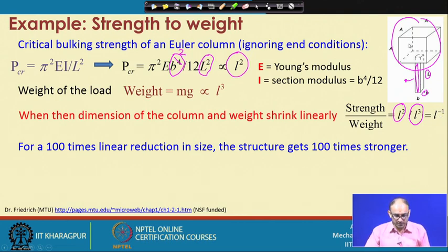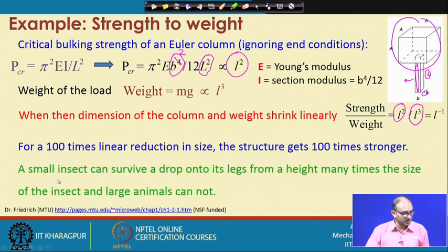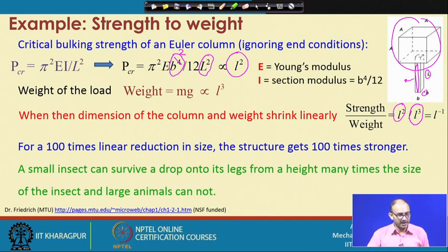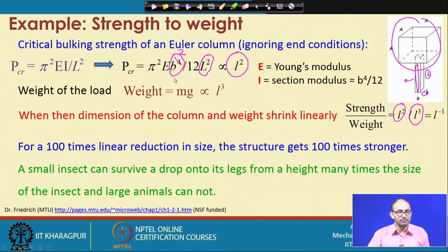The advantage is that when scaling down systems such as cantilever beams carrying loads, smaller things actually retain relatively large strength. For example, smaller insects can survive a drop from many times their height. A lizard falling from a 2–3 floor building walks away without harm. But a large animal cannot — if you dropped an elephant from that height it would die. These are natural examples, and the same principle applies to manmade beam elements when designing structures where understanding strength-to-weight ratio is critical.